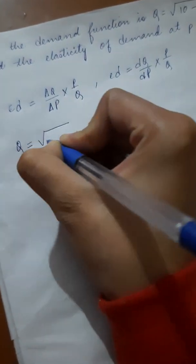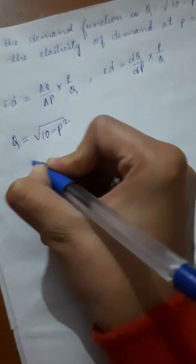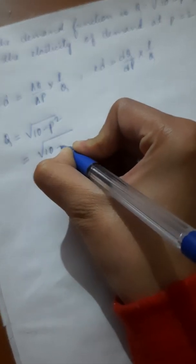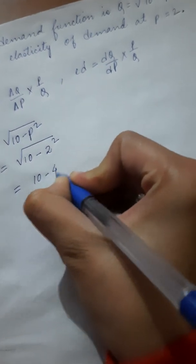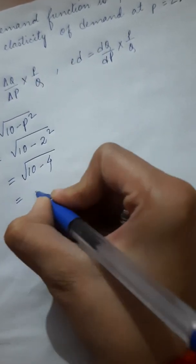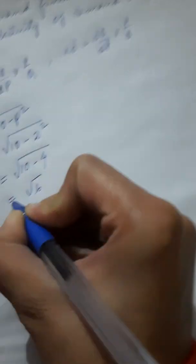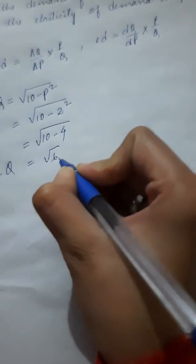Now, q is given as root 10 minus p squared, and instead of p we can write 2 because p equals 2. 10 minus 4 root over gives root 6. Therefore, q equals root 6.